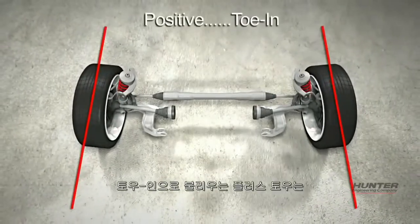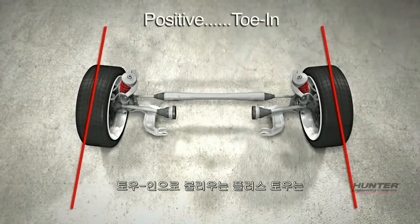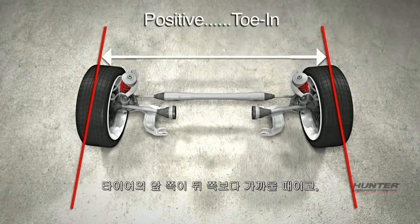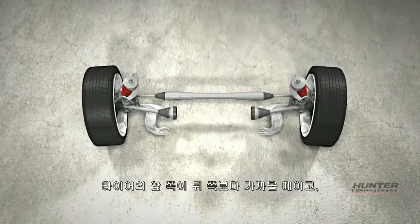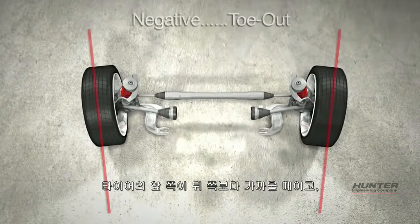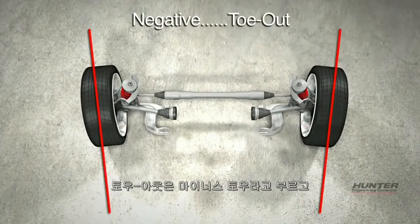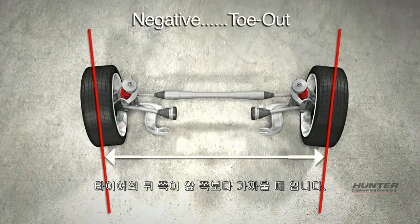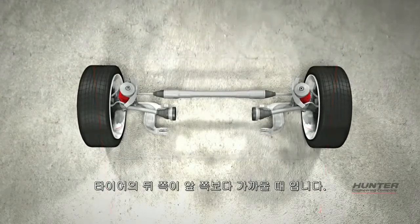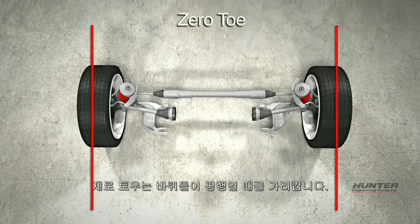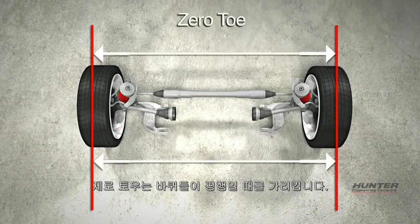Toe is positive, also known as toe-in, when the front of the tires are closer together than the rear of the tires. Toe is negative, also known as toe-out, when the rear of the tires are closer together than the front of the tires. Zero toe occurs when the wheels are parallel.